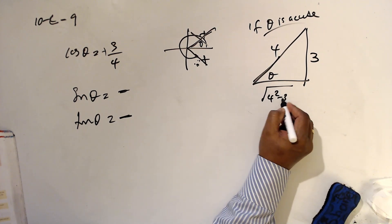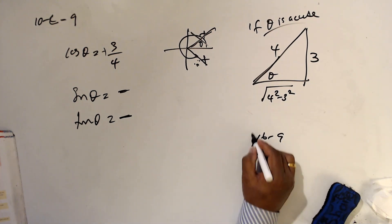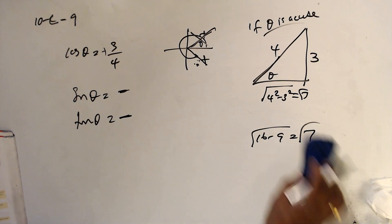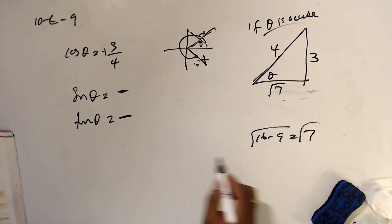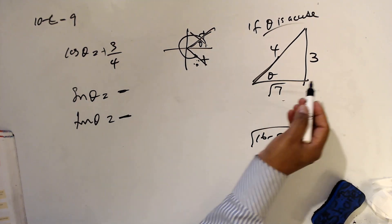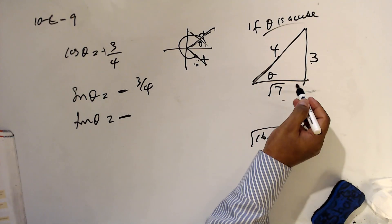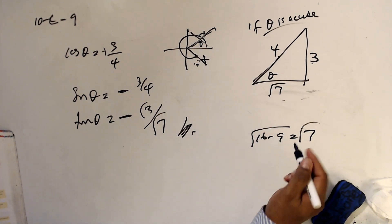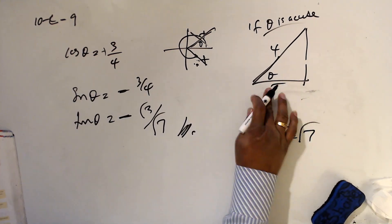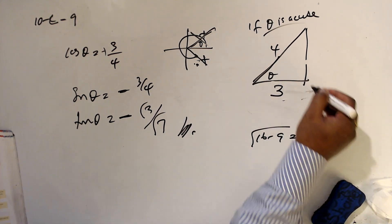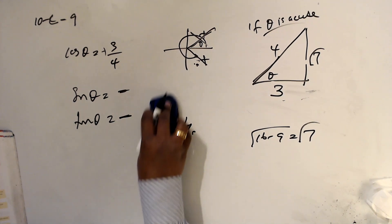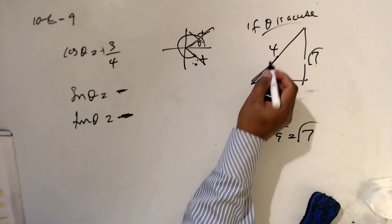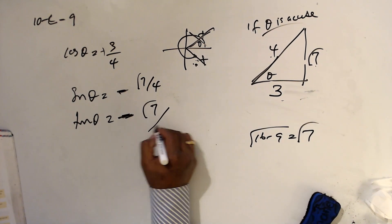The missing side is √(4² - 3²) = √(16 - 9) = √7. So sin θ = √7/4 and tan θ = √7/3. I made a mistake earlier — 3 should be the adjacent side, so the corrected values are sin θ = √7/4 and tan θ = √7/3.